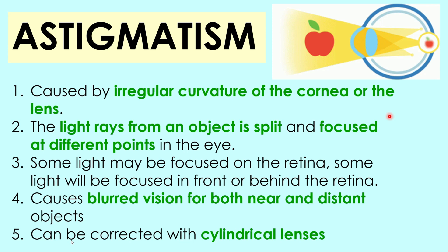The third type of visual defect is astigmatism. Astigmatism is caused by irregular curvature of the cornea or the lens. This means the surface of the cornea is irregular. Therefore, the light rays from an object are split and focused at different points in the eye. This causes the light entering the eye to not focus towards one point in the retina. The light might be focused on the retina, but some of it might be focused in front or behind the retina as well. As a result, the image formed is inaccurate and makes the vision less clear and not sharp for both near and distant objects.